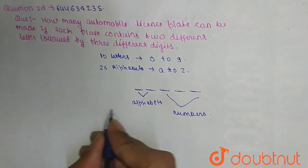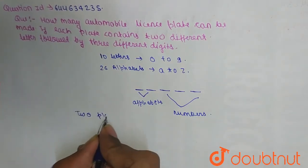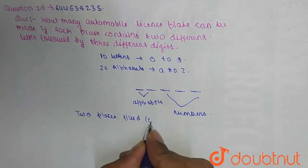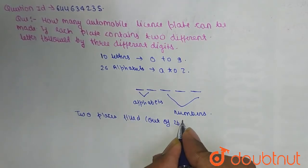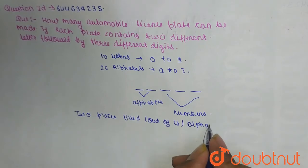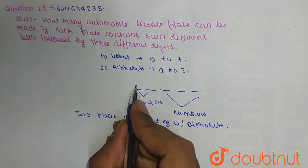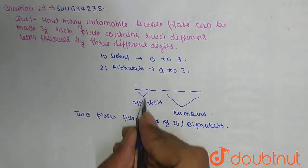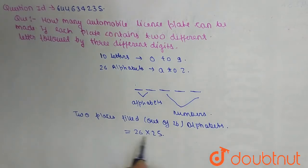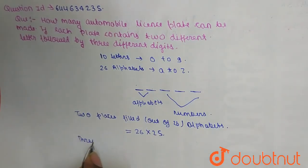Here we have two places to fill out of 26 alphabets. For the first position there are 26 choices, and for the second position there are 25 choices, since letters must be different. So that gives us 26 × 25.